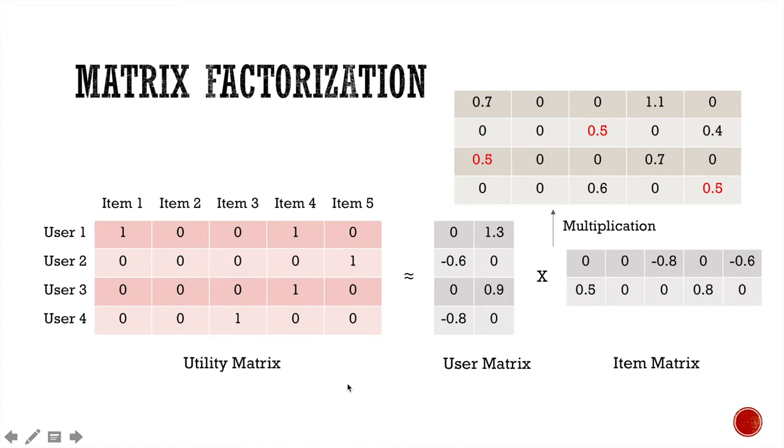And this utility matrix is factorized in a way such that the loss or the difference between the reconstructed matrix and the true utility matrix is minimized. And one commonly used loss function is mean square error, which basically computes the difference in each of these entries, squares them up, and takes the average.